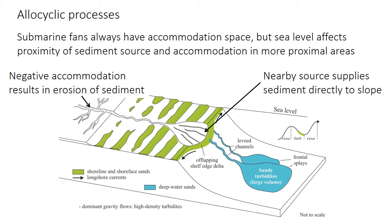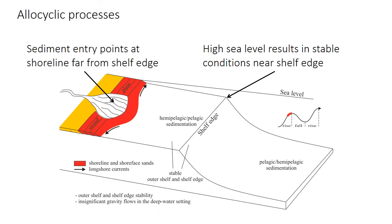Falling base level can also enhance coarse sediment supply because negative accommodation in a fluvial setting leads to erosion of sediment. The river will be actively eroding sediment, not depositing it, and will dump this coarse sediment directly into the fan. On the other hand, when sea level is high, sediment enters the marine system at river mouths located very far from the shelf edge, so a lot of that sediment gets trapped in beach or delta settings and very little makes it into the submarine fan.